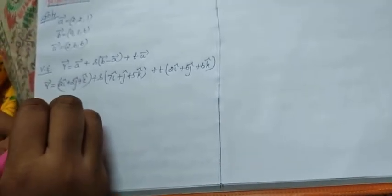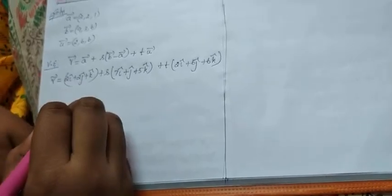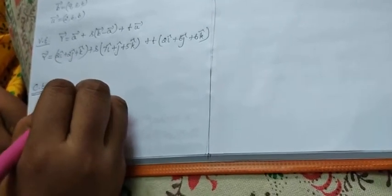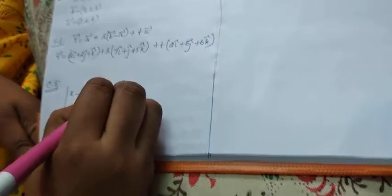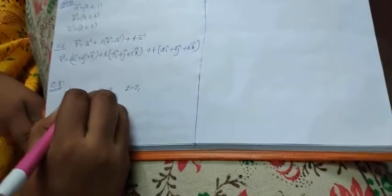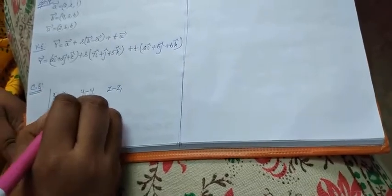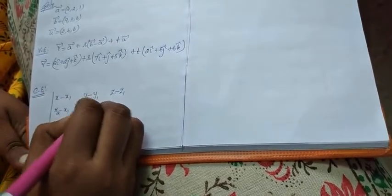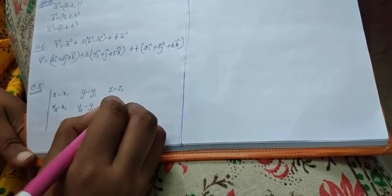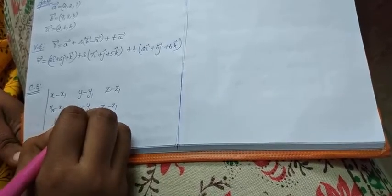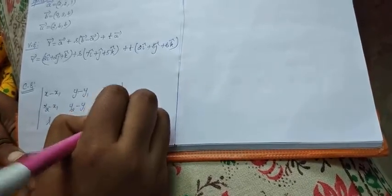Now come for the Cartesian equation. Now what is the Cartesian equation of this problem? Cartesian equation is determinant of (x minus x1, y minus y1, z minus z1), (x2 minus x1, y2 minus y1, z2 minus z1), (l1, m1, n1) is equal to 0.